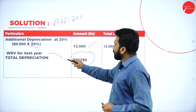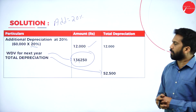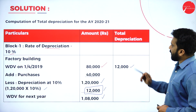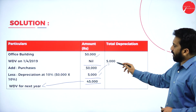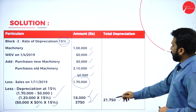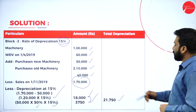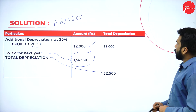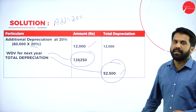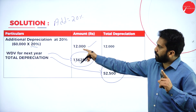Your total WDV after deducting all depreciation — 18,000, 3,750, and 12,000 — from 1,70,000 gives 1,36,250. This is your WDV and this amount is your depreciation. Adding all depreciation figures: 12,000 + 5,000 + 1,750 + 18,000 + 3,750 + 12,000 — the final answer is 52,500. You are supposed to learn only one key thing, which is the machinery concept.